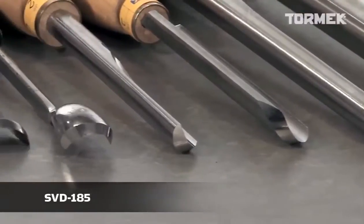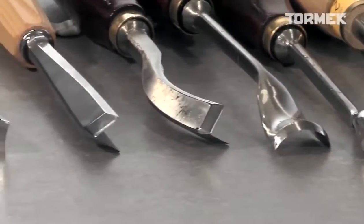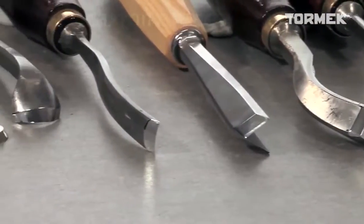different types of round and spoon-shaped carving gouges, straight or curved V-tools, and also changeable turning cutters.